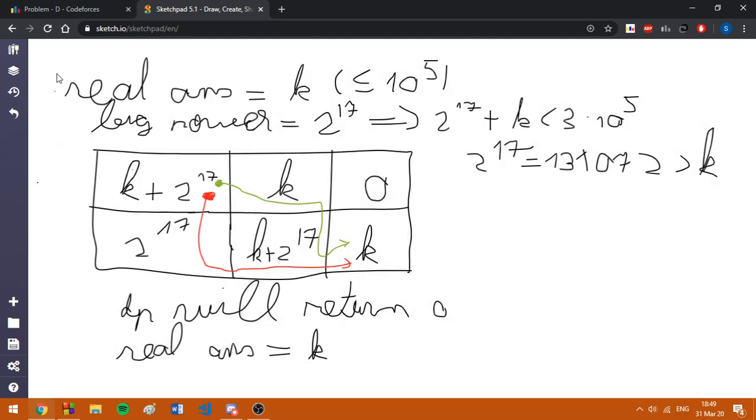So, we know that the real answer is k, and we are going to generate a matrix such that the DP answer will be 0. In order to achieve this, I'm going to use a big power of 2,